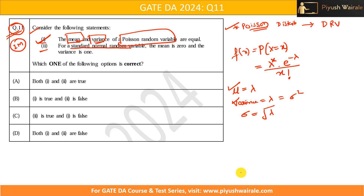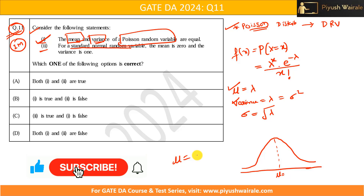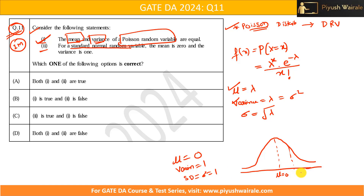Now for the second statement, regarding the standard normal distribution: if you look at the normal distribution, mu is in the center. For the standard normal distribution specifically, the mean (mu) is zero and the variance is one, so the standard deviation (sigma) is also one. We represent points as mu=0, mu+sigma=1, and mu-sigma=-1. The standard normal variable Z follows N(0, 1) — mean zero and variance one. So the second statement is also correct.